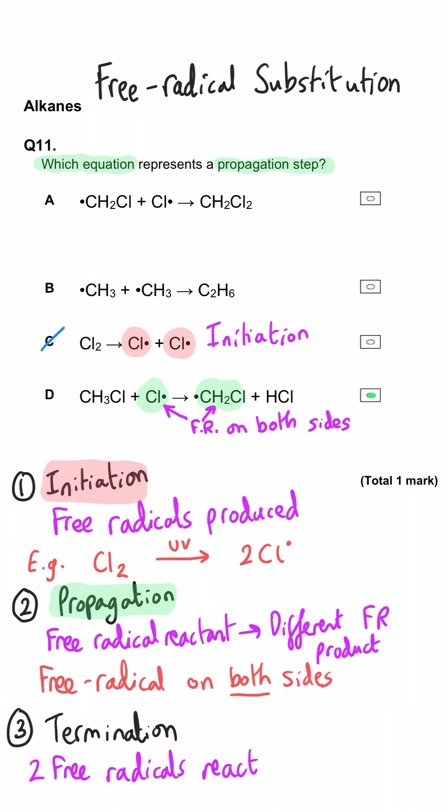A and B, they are the third type of step in the mechanism, which is the termination step. Two free radical reactants are making a product that does not have a free radical. So A and B are wrong, they are termination steps. D is correct.